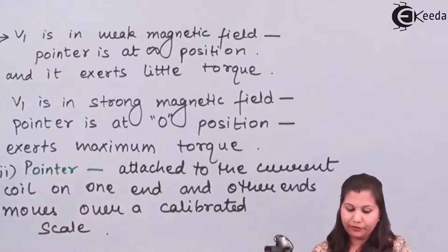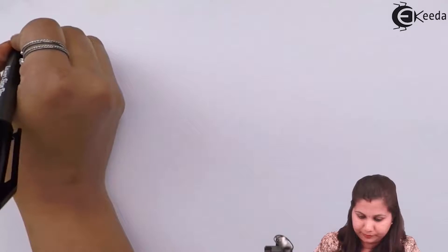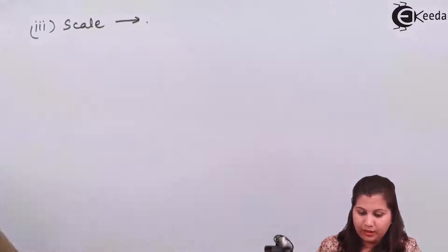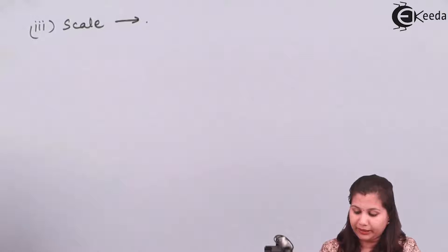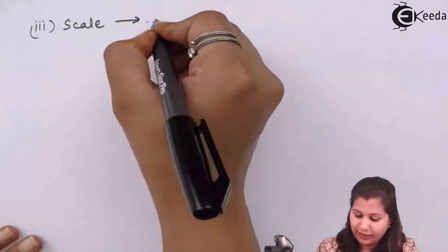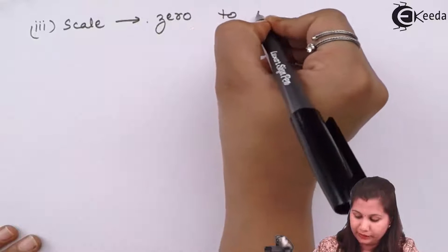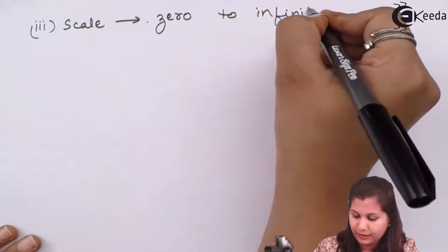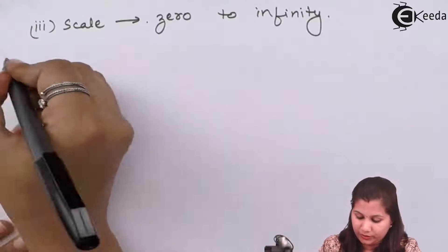The third component of the Megger is the scale. The scale is provided in front of the Megger and on that scale we have divisions from zero to infinity, through which we can read the values of the unknown resistance.